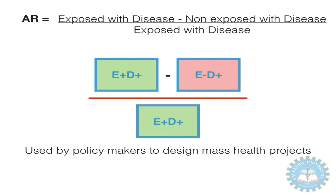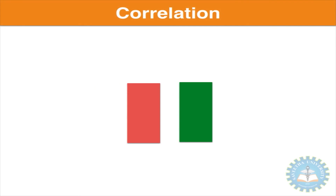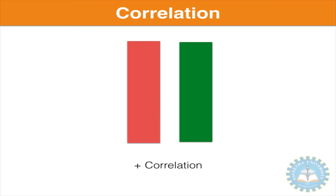The next parameter related to causation is correlation — that is, the chances that two parameters vary simultaneously with one another. For example, as the red bar grows up, the green bar goes up. This is called a positive correlation.